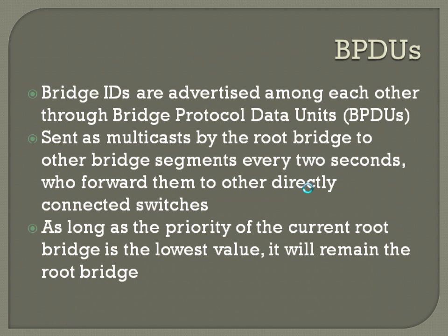Root bridges also use something called BPDUs, or bridge protocol data units. Bridge IDs are advertised among switches through BPDUs, which are sent as multicast by the root bridge to other bridge segments every two seconds, and then forwarded to other directly connected switches. As long as the priority of the current root bridge is the lowest value, it remains the root bridge. As soon as you introduce another switch with a lower priority, you'll have to go through a new root bridge election.